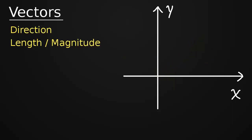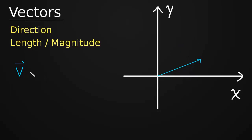Now let's look at a specific example. Here is a vector, and I want to name that vector. I'm going to call it V and put a little arrow over the top to make sure we know this is a vector. I want to capture the information that arrow is telling us without needing to draw it. I'm not going to say V equals this arrow — that's too ambiguous. I need something more definite, something with more structure.